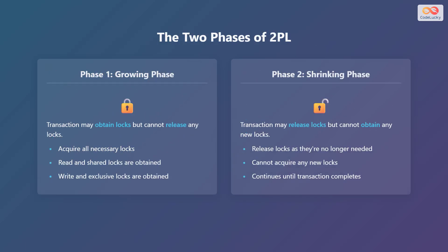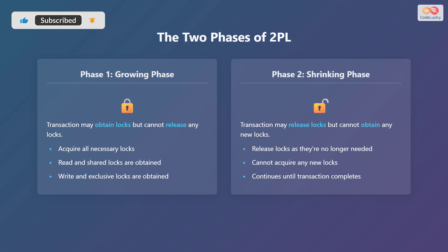The two-phase locking protocol consists of two distinct phases: the growing phase and the shrinking phase. In phase one, the growing phase, a transaction may obtain locks but cannot release any locks. During this phase all necessary locks are acquired, including read and shared locks as well as write and exclusive locks.